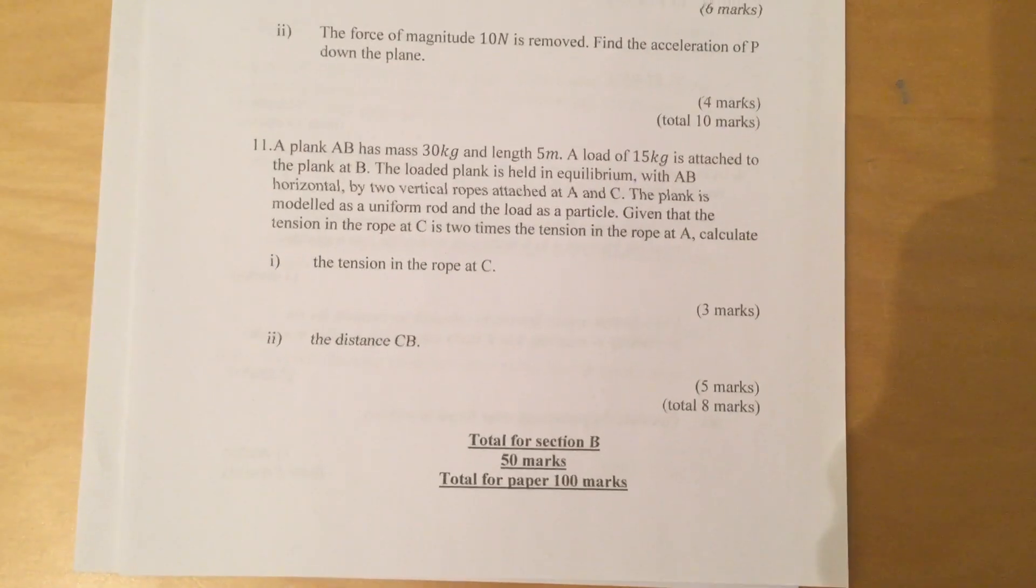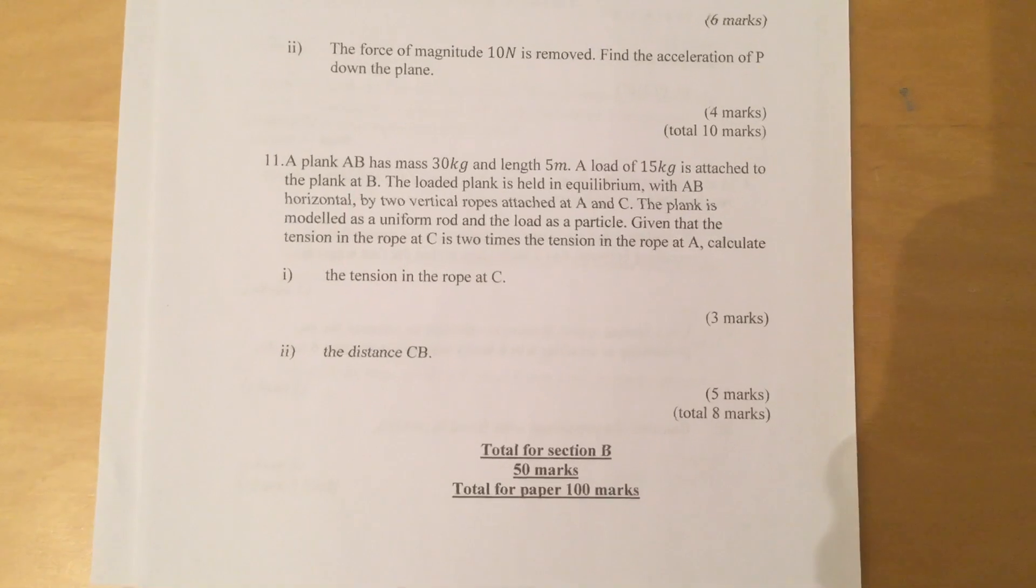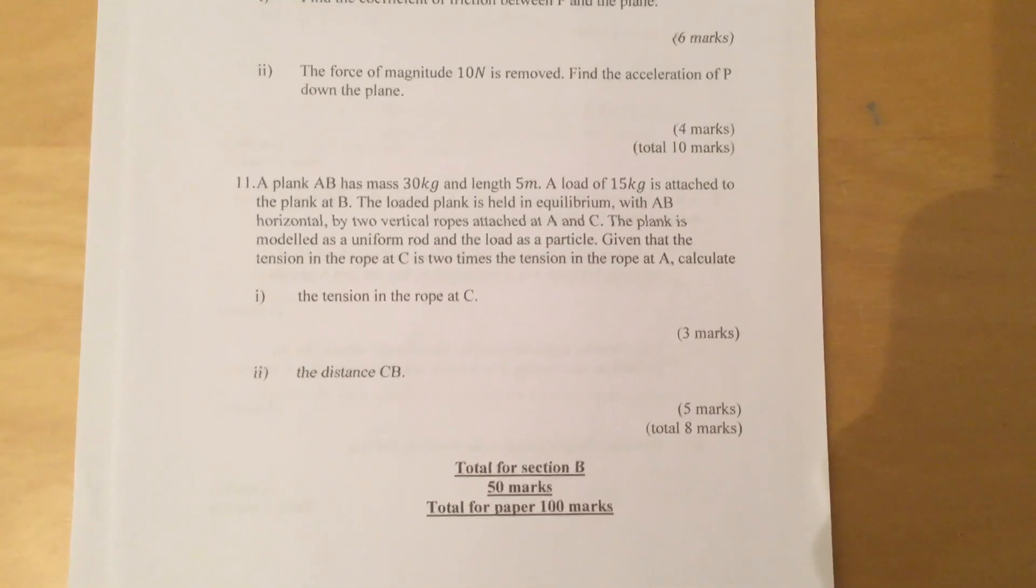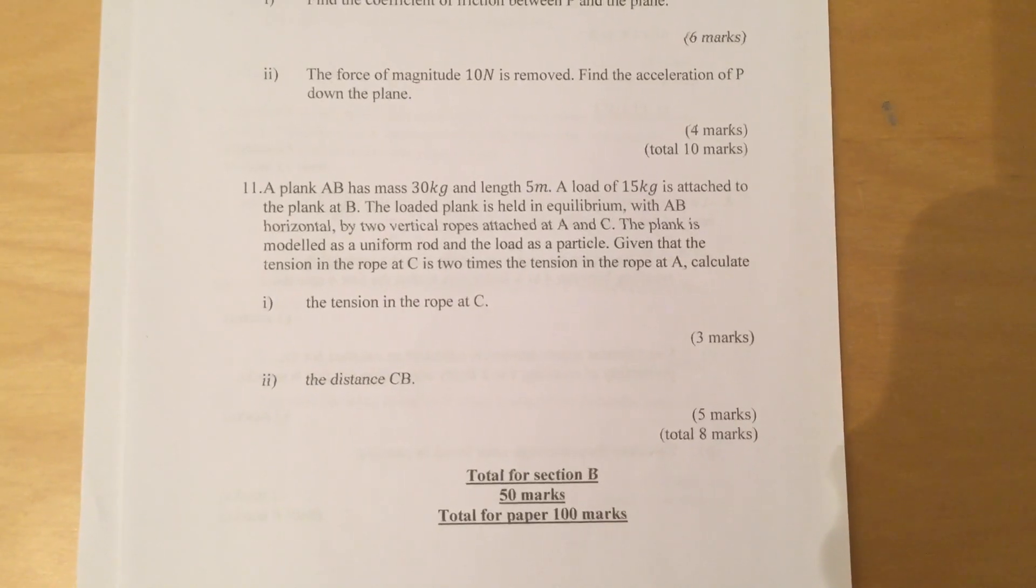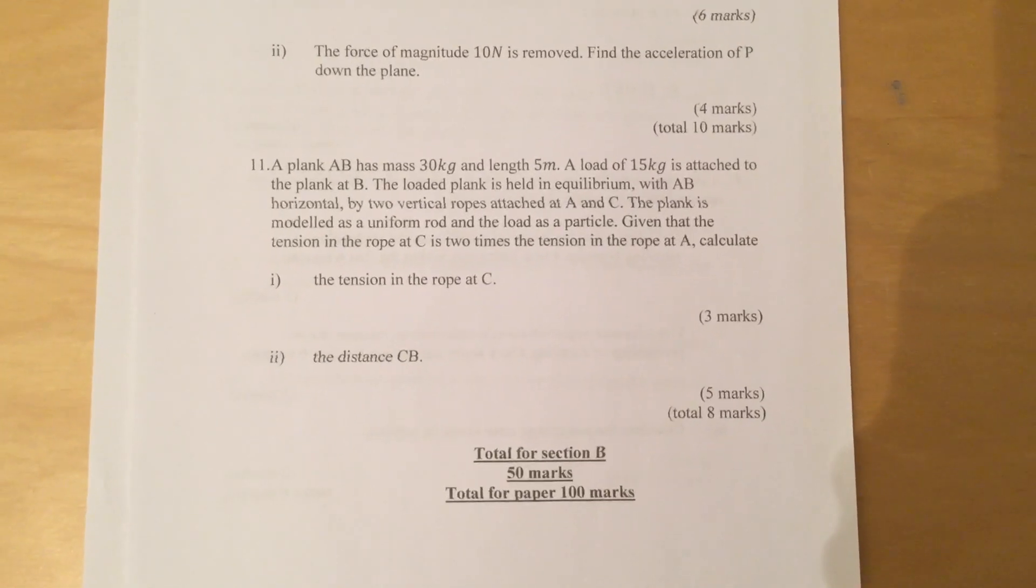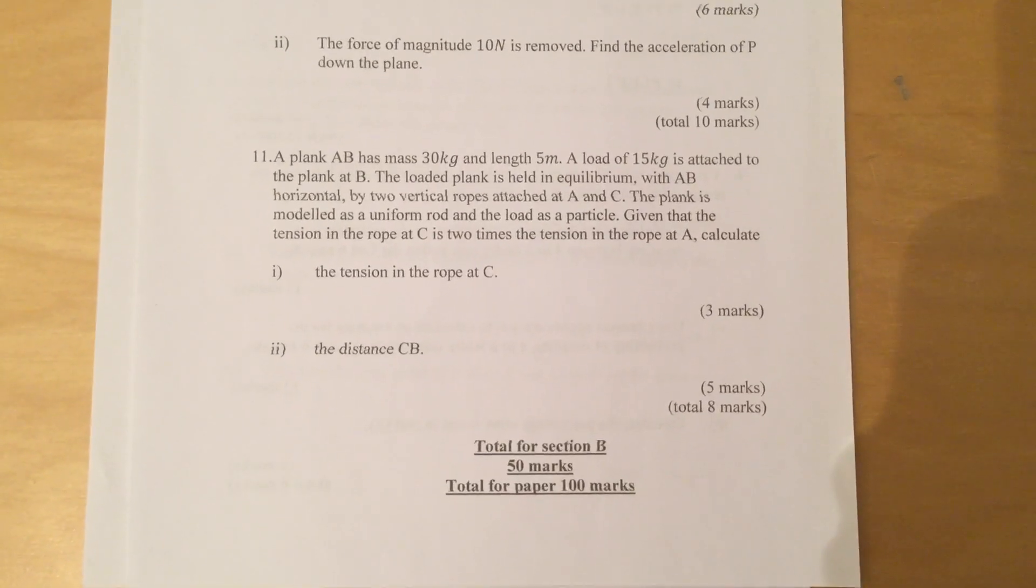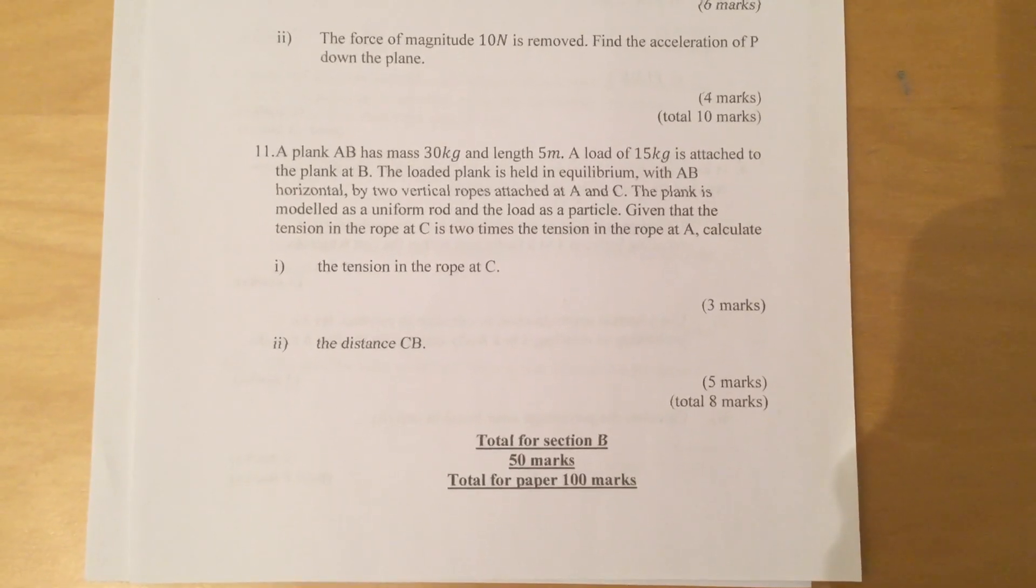Question 11: A plank AB has mass 30 kg and length 5 meters. A load of 15 kg is attached to the plank at B. The loaded plank is held in equilibrium with AB horizontal by two vertical ropes attached at A and C.